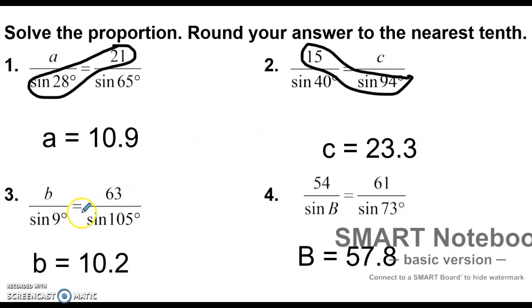Next one. I notice my unknown is right there, so I'm going to multiply these two. You go 63 times the sine of 9, find an answer, then divide that by sine of 105, and you get 10.2.